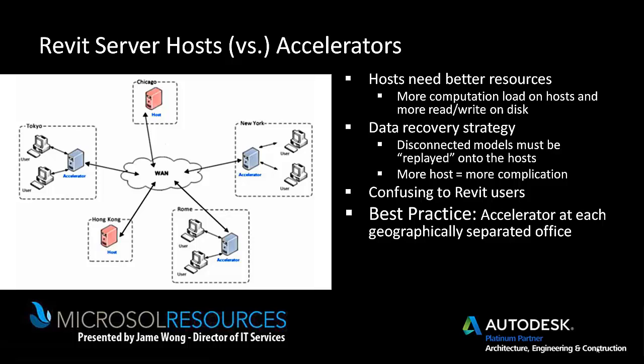When Revit starts up and a user wants to open a model from Revit Server, if you have multiple hosts, all the hosts will be listed when they go to File Open. The best practice is to have an accelerator at each geographically separated office and place hosts in centrally located data centers — for example, a data center in North Carolina or Virginia — and then have accelerators in offices like New York, New Jersey, Connecticut, and Boston.